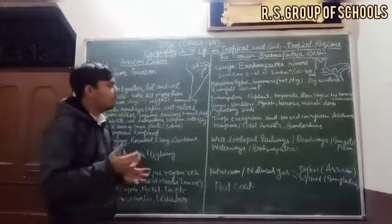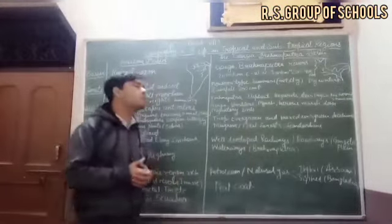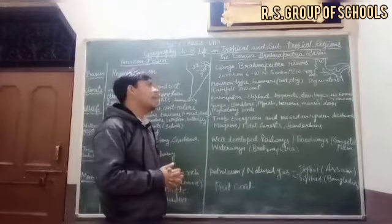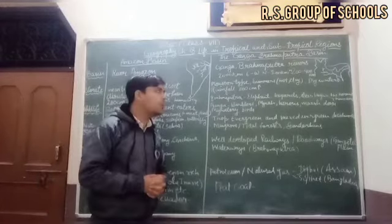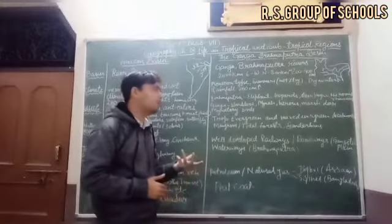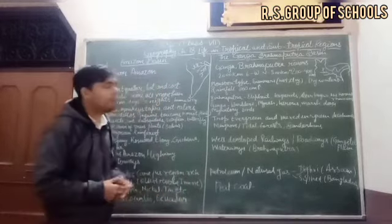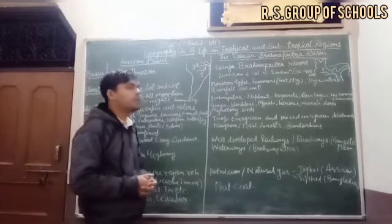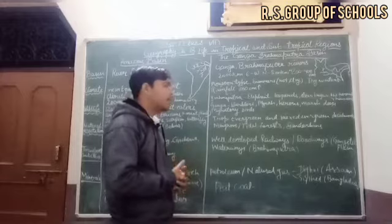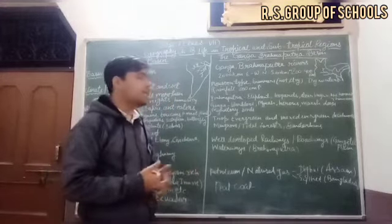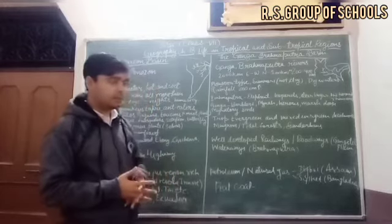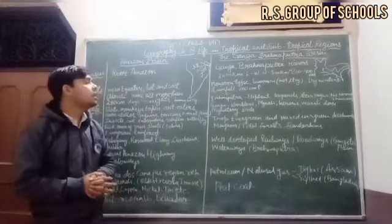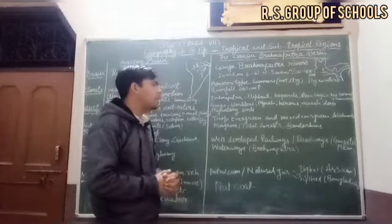Now let's talk about wildlife. The Ganga-Brahmaputra region has both herbivores and carnivores in huge variety — elephant, leopard, deer, langur, and rhinoceros, which are famous in Manas and Kaziranga National Park. In the Gangetic Plains there are warblers, herons, and marsh birds. In winter, migratory birds also come to the Himalayan region.